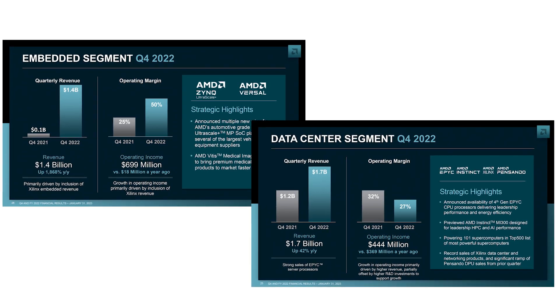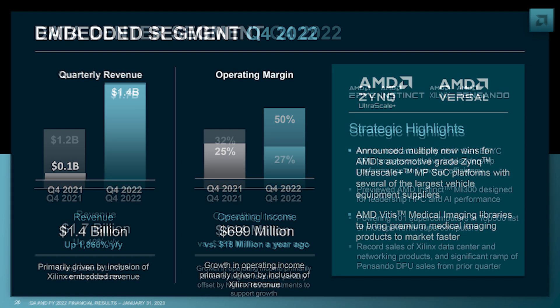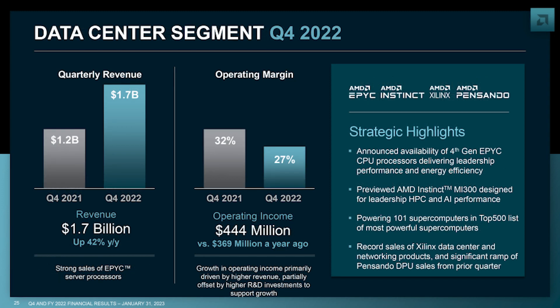The embedded and data center segments saw significant growth compared to 2021. The embedded segment, which is largely automotive and aerospace-based, saw a quarterly revenue of $1.4 billion — 1,868 percent higher than Q4 2021. The data center segment also saw bigger growth compared to Q4 2021, even though operating margins were 5 percent lower than the previous year.